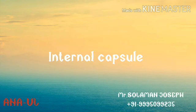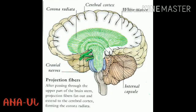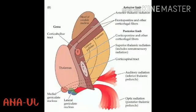Most of the nerve fibers interconnecting the cerebral cortex with centers in the brainstem and spinal cord, and with the thalamus, pass through the interval between the thalamus and caudate nucleus medially and the lentiform nucleus laterally. This region at the upper end of the brainstem forms a compact band called the internal capsule. Above, the internal capsule is continuous with the corona radiata; below, with the crus cerebri of the midbrain.